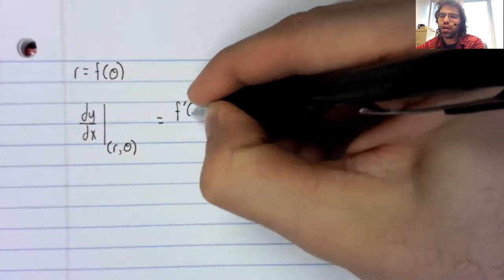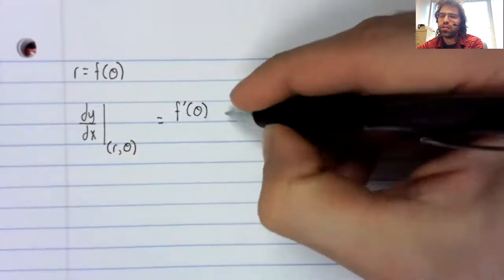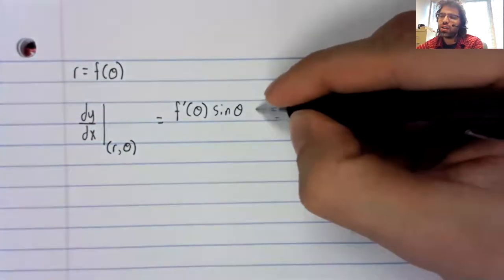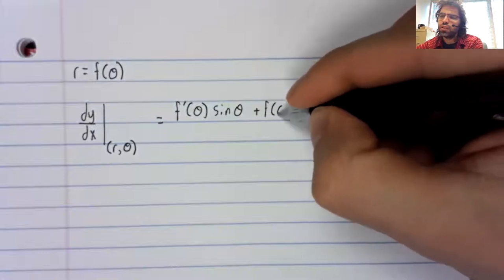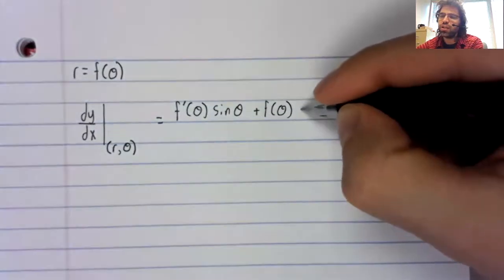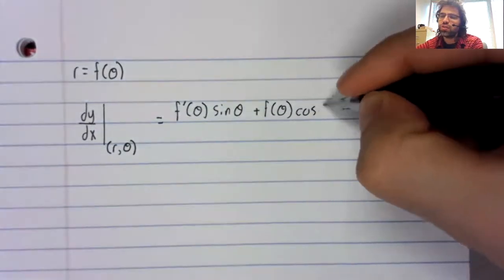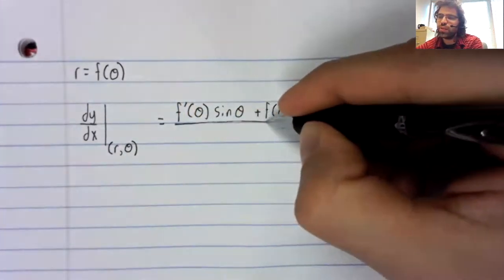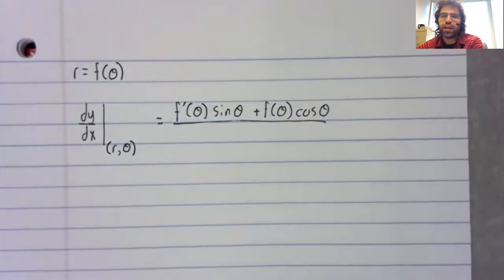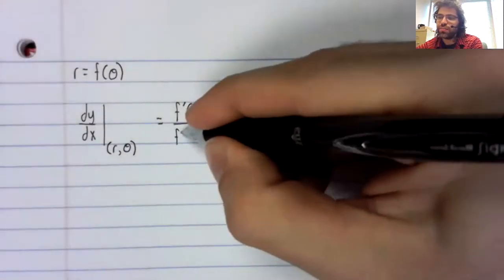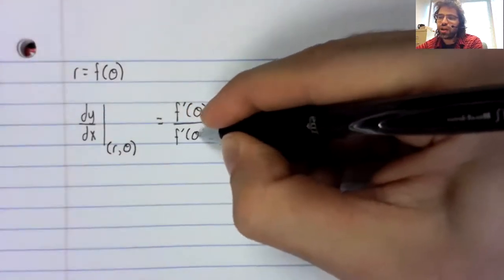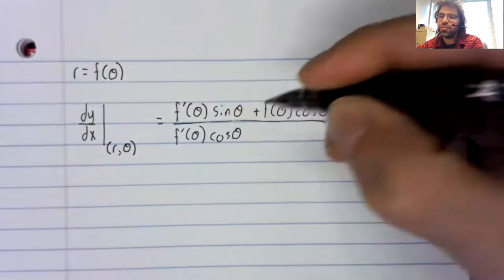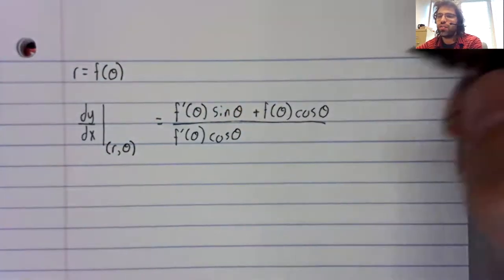dy/dx equals f'(θ) times sin(θ) plus f(θ) times cos(θ), divided by f'(θ) times cos(θ) minus f(θ) times sin(θ).